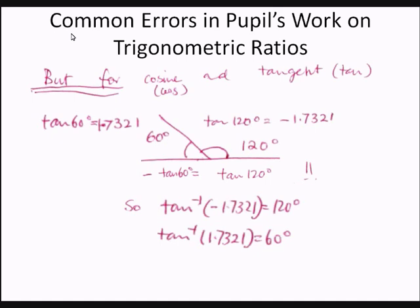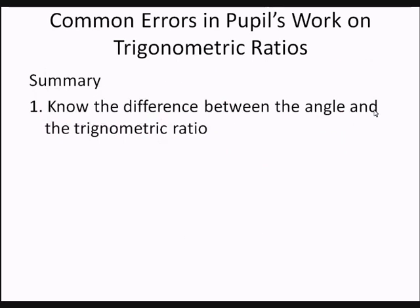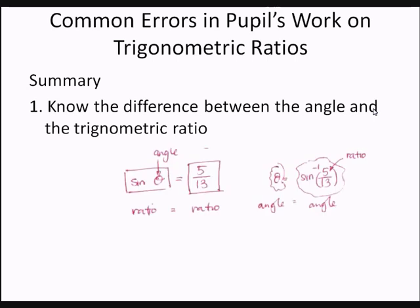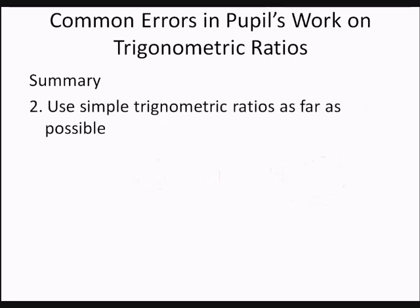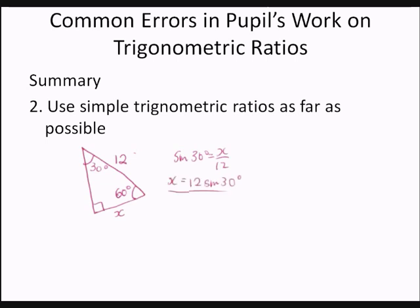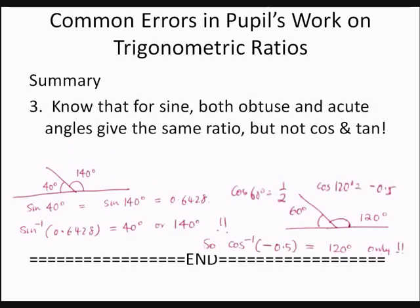In summary: first, know the difference between the angle and its trigonometric ratios. Second, use simple trigonometric ratios as far as possible. Third, know that for sine, both obtuse and acute angles give the same ratio, but this is not the case for cosine and tangent.